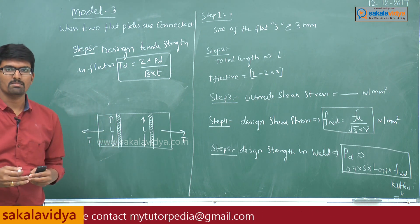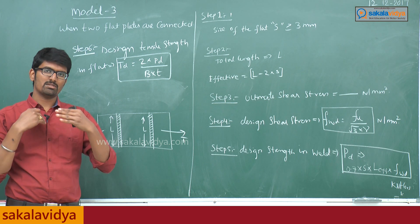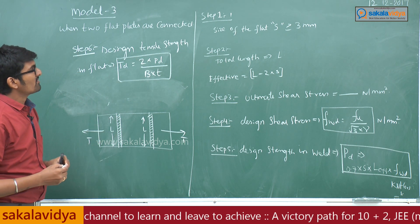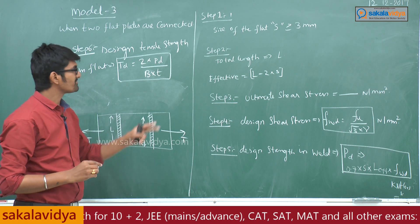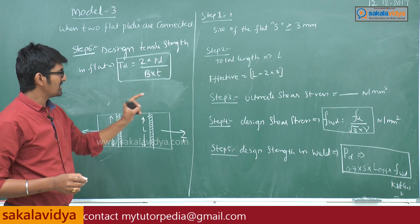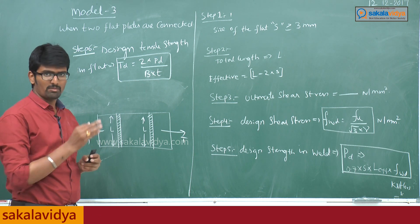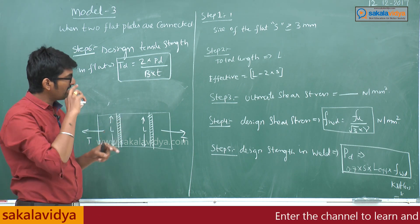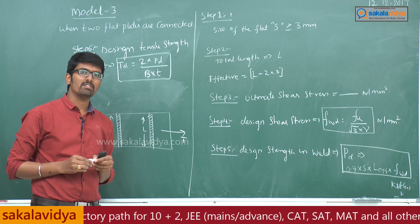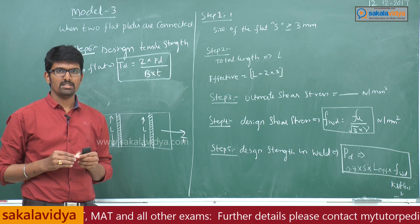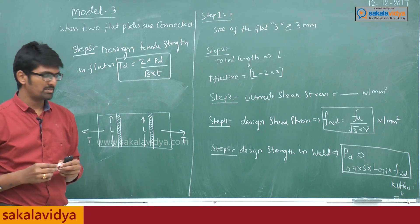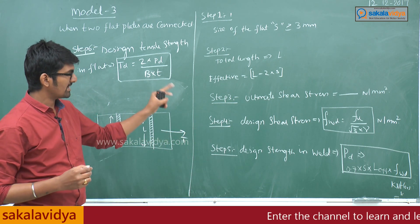In the two plates or two flats connected together by using a gusset plate overlap, when the two plates overlap and fillet type weld is done, we need to follow these steps for the design procedure. Step 1: the size of the flat S must be greater than or equal to 3 mm — this is common for all design methods. Step 2: effective length equals total length minus 2 times the size of the weld. Step 3: ultimate shear stress will be given in the question, in units of Newton per mm squared. Step 4: design shear stress F_wd equals ultimate shear stress divided by root 3 into partial safety factor — 1.25 if welding is done in the workshop, 1.50 if done on site. Step 5: design strength in the weld P_D equals 0.7 into size of the weld into effective length into design shear stress.